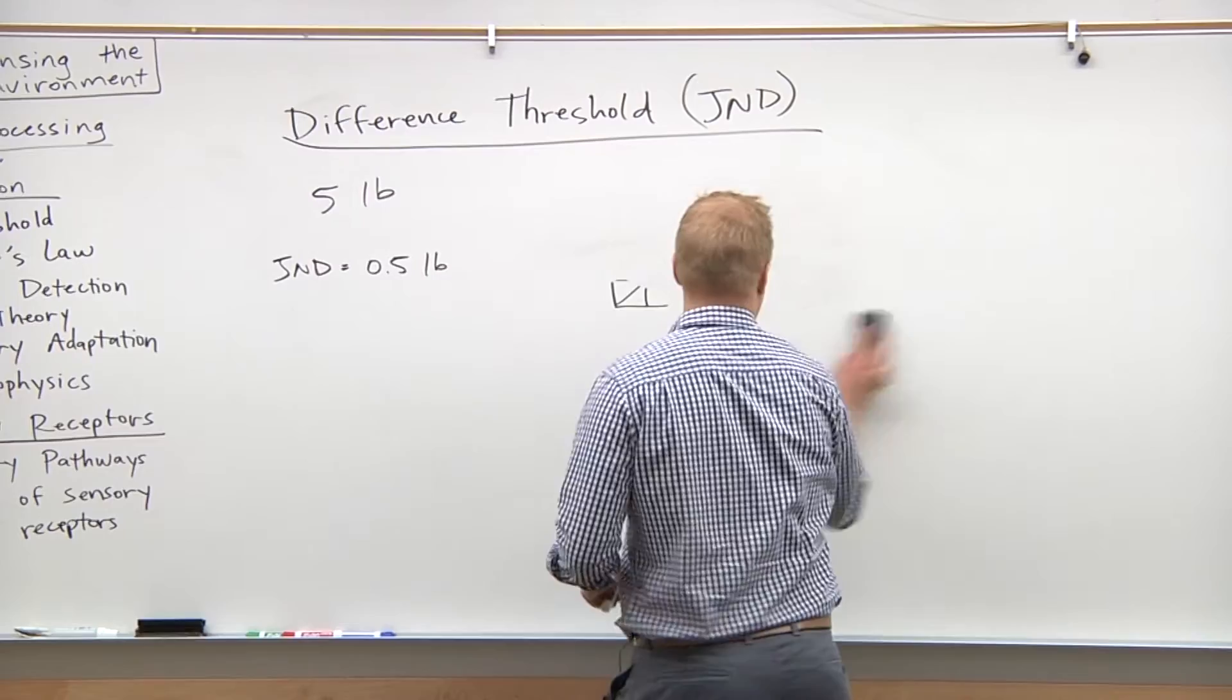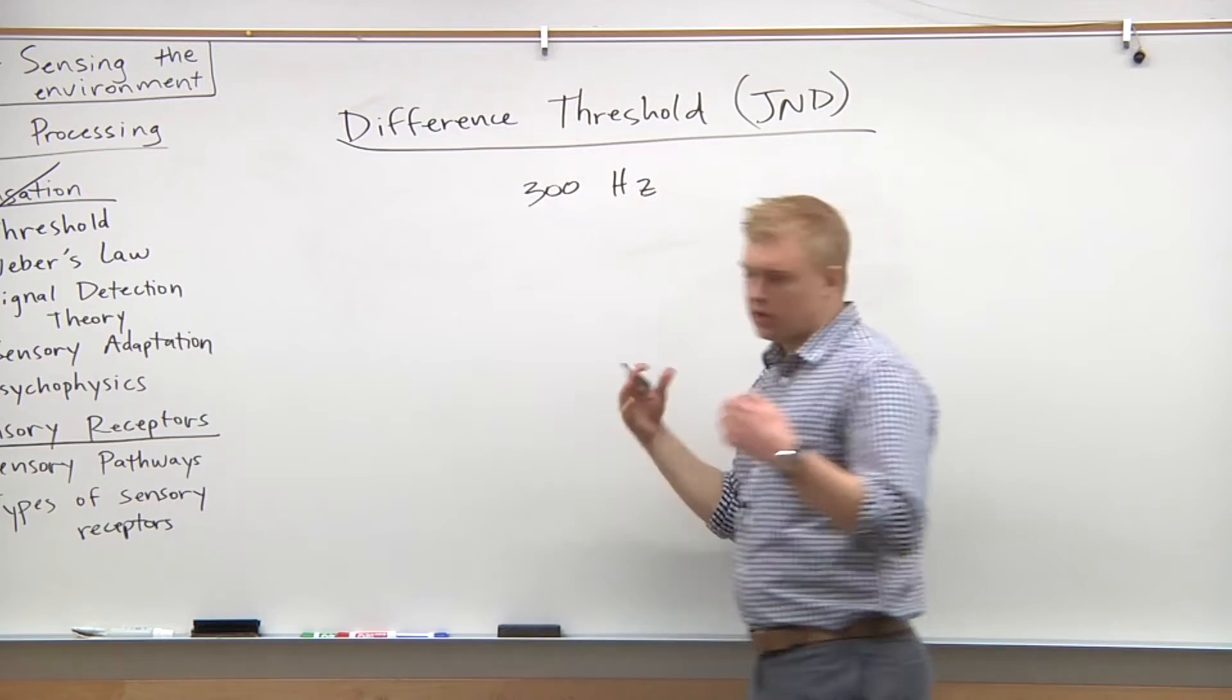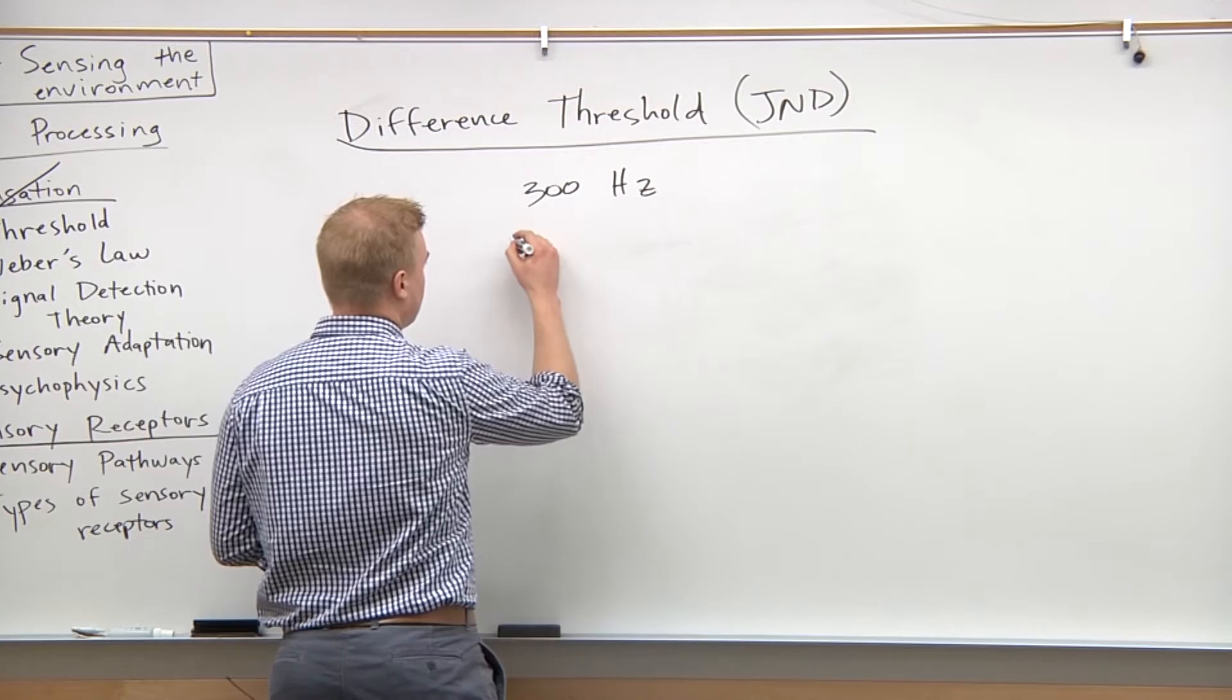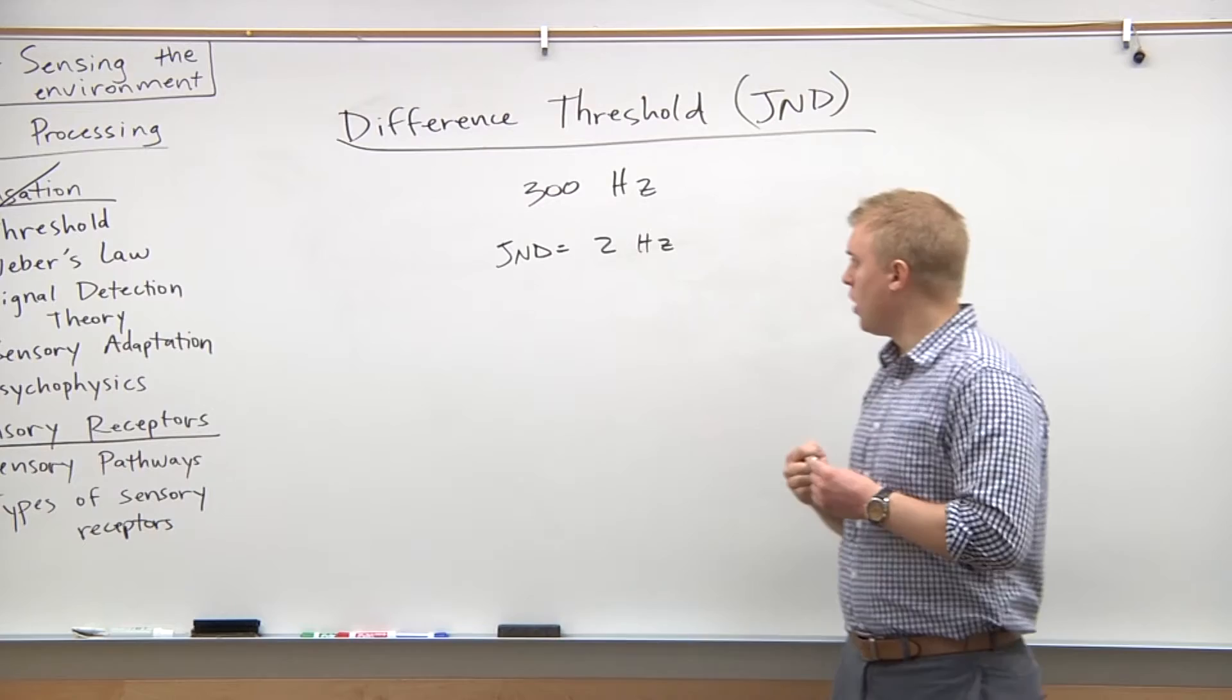Let's look at another example here, maybe a little more difficult math. Let's think if we heard a sound coming in at 300 hertz. If we hear another sound at 300.1, you know, probably won't pick that up at least not half the time. So let's say the difference, the JND at this stimulus, is two hertz.